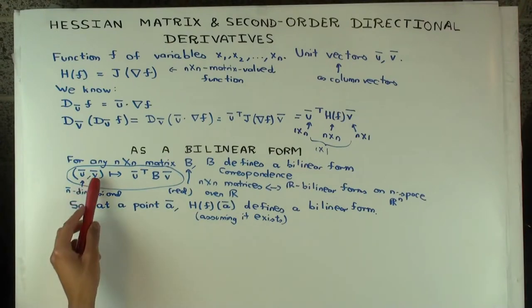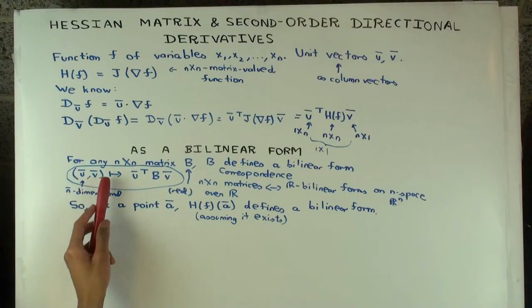For any two vectors, n dimensional vectors, I can send that pair of vectors, the ordered pair of vectors, to this product.